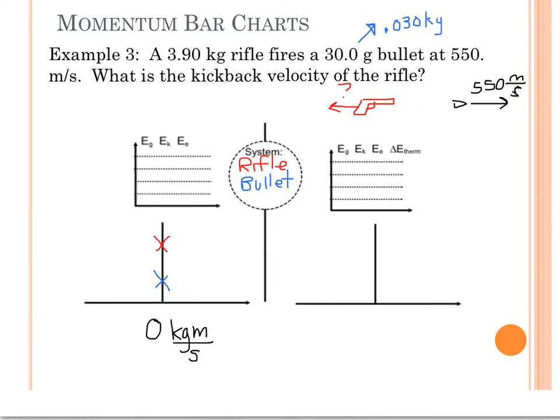So this bullet has a very tiny mass, but a very large velocity. So I'm going to represent the bullet's momentum with a very skinny bar because the mass is only 0.030 kilograms, but a very long bar because the bullet has a very huge velocity, 550 meters per second.